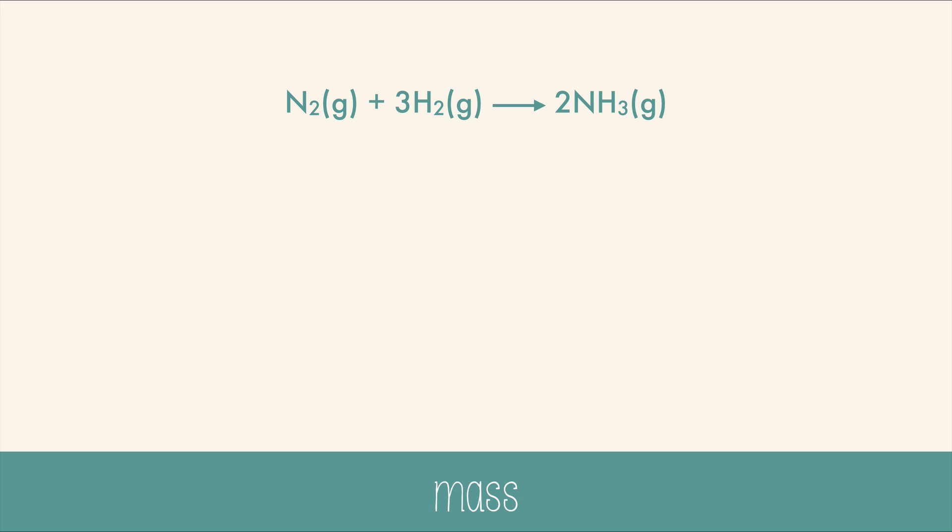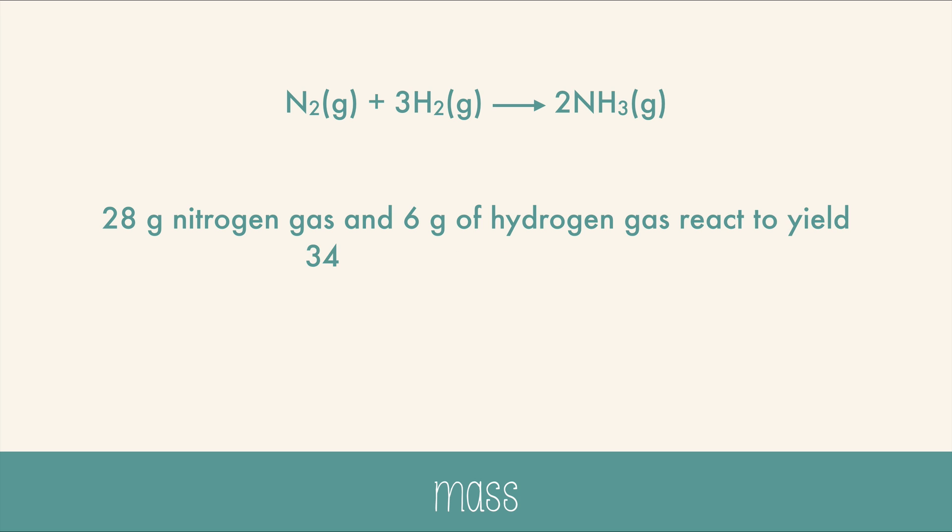Now let's try mass. 28 grams of nitrogen gas and 6 grams of hydrogen gas react to yield 34 grams of ammonia gas — I got those numbers from the periodic table. If you add 28 and 6 you get 34, which means the mass was conserved: 34 in the beginning and 34 at the end. No matter was created or destroyed.